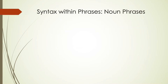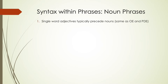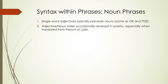With noun phrases, single-word adjectives are typically preceding nouns — this happened in Old English and still happens in present-day English. The adjective and noun order was occasionally reversed in poetry, especially in things translated from French or Latin. We start seeing the indefinite article 'a' or 'an,' which came from an unstressed variant of the number 'one,' becoming 'on' or 'ah,' and then eroding further until we get that indefinite article.